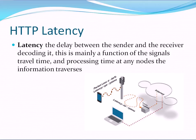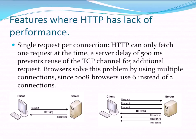Some of the most common features where HTTP lacks performance are: single request per connection — because HTTP can only fetch one resource at a time. HTTP pipelining helps, but still enforces only a FIFO queue. A server delay of 500 milliseconds prevents reuse of the TCP channel for additional requests. Browsers work around this problem by using multiple connections; since 2008, most browsers have moved from two connections per domain to six.